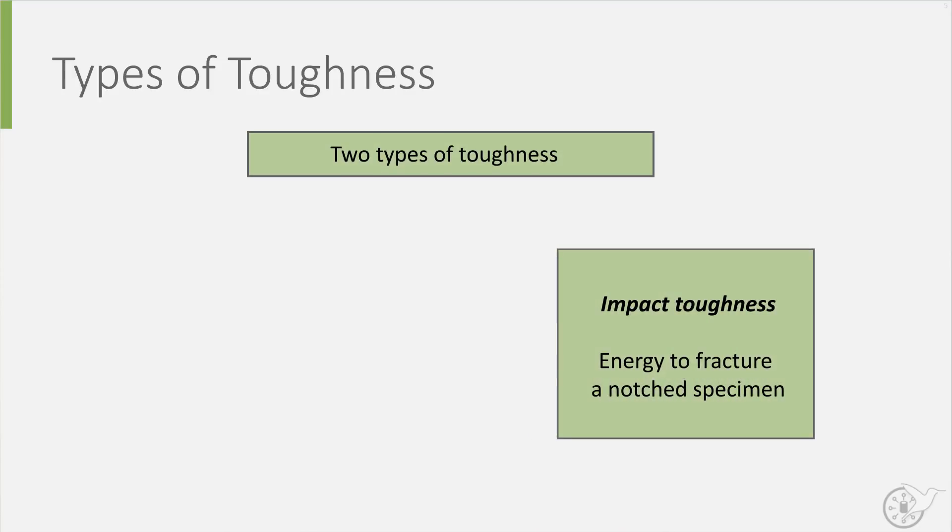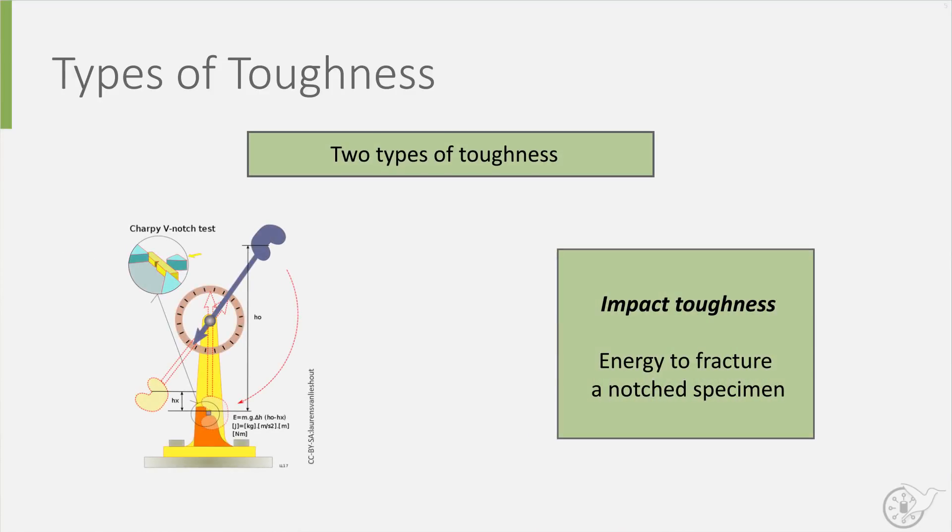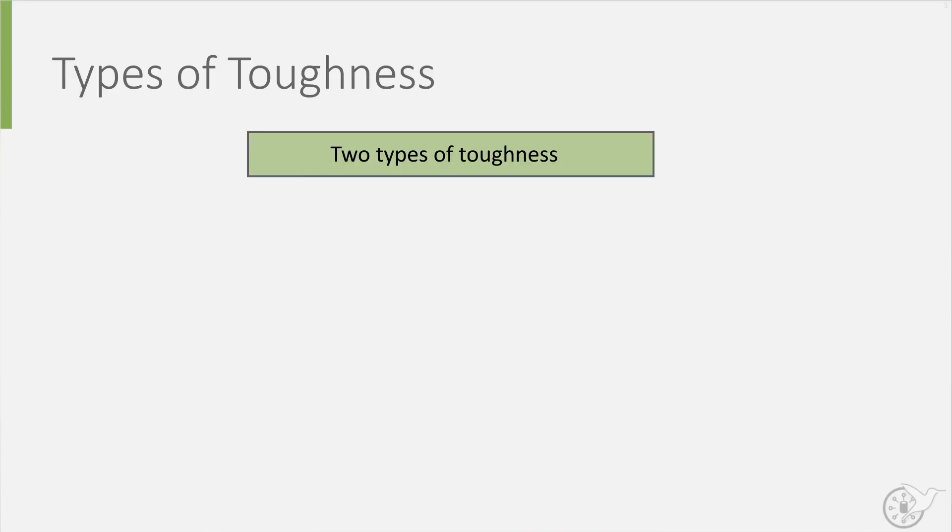First, impact toughness, which is measured by carrying out a Charpy impact test. This involves having a swing hammer device hitting a notched specimen, and measuring the energy needed to break the specimen.